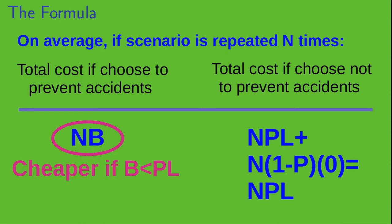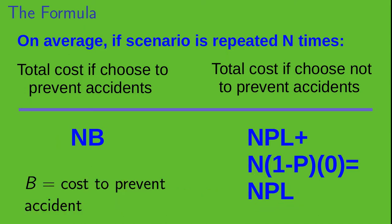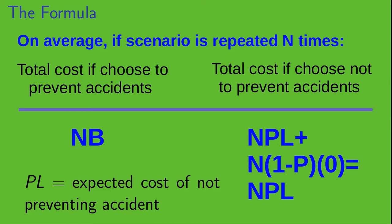So if B is less than PL, it's cheaper to prevent the accidents. And if B is greater than PL, it's cheaper to not prevent the accidents. Now, let's remember that B is the cost to prevent the accident, and PL is the expected cost of not preventing the accident — that's the cost of not preventing the accident when averaged over the N repetitions of the scenario.